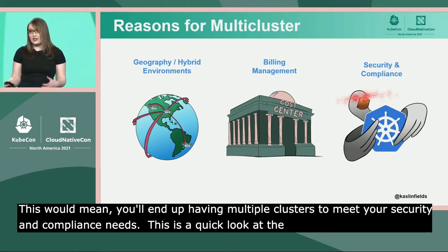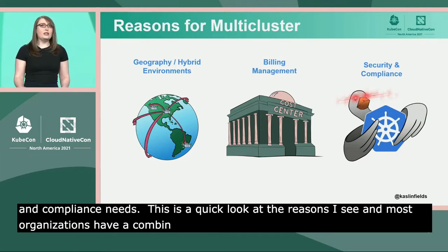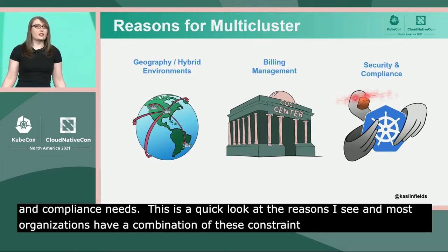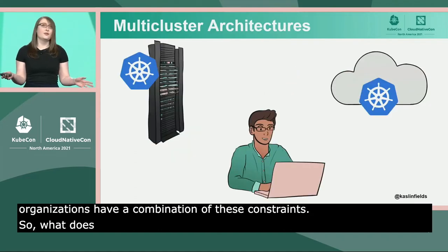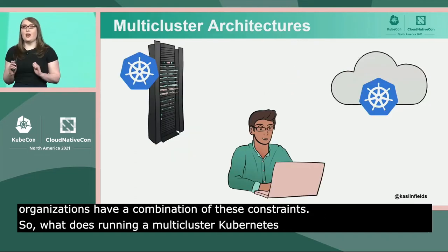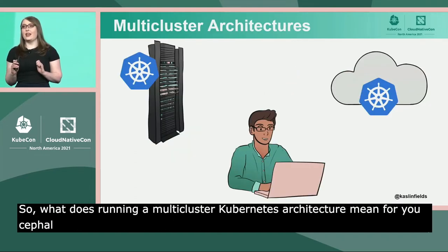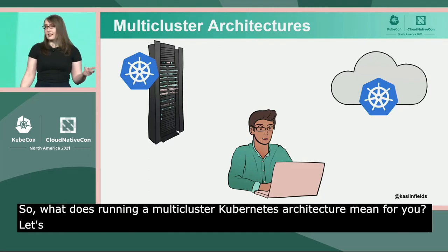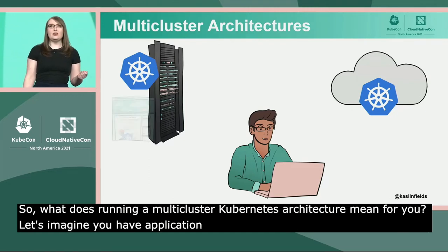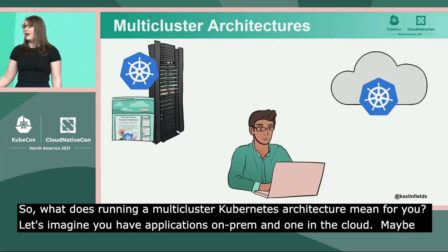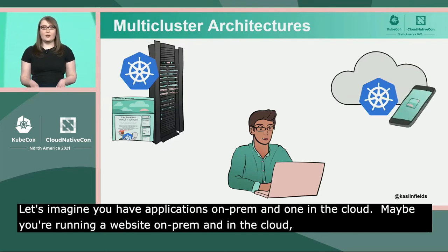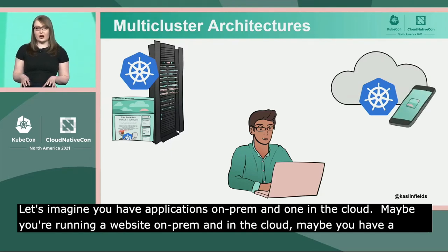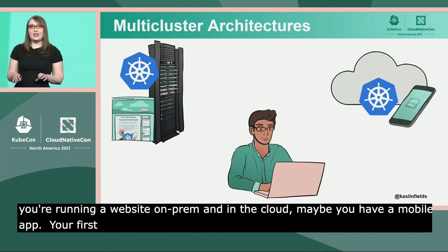Most organizations have a combination of these constraints. So what does running a multi-cluster Kubernetes architecture mean for you? Let's imagine you have applications running in a cluster on-prem and one in the cloud — maybe you're running a website on-prem and in the cloud, maybe you have a mobile app. Your first challenge in working with this multi-cluster architecture will be networking.